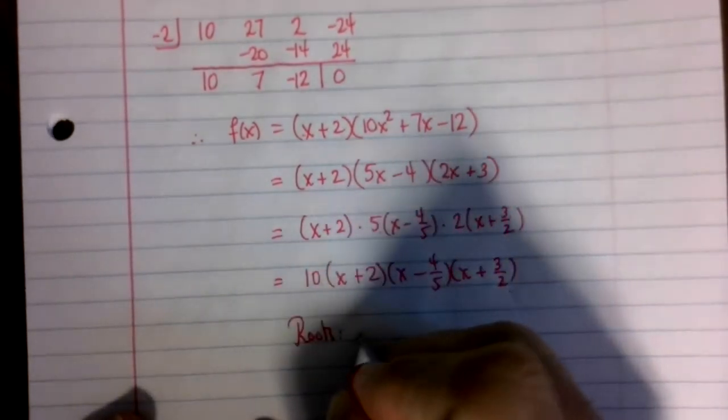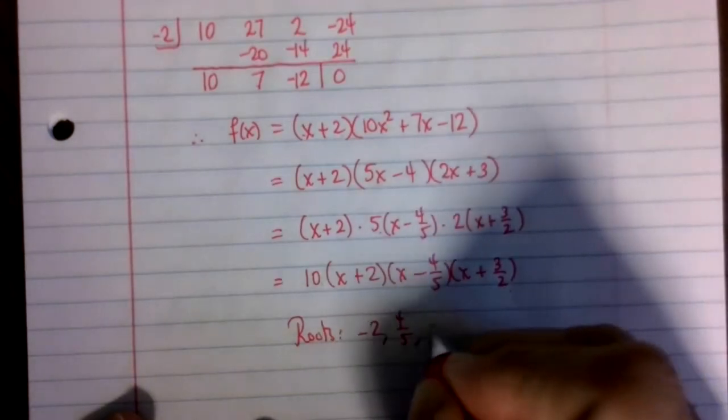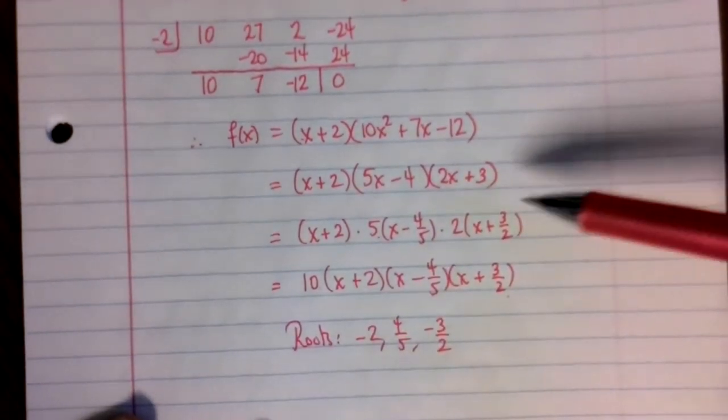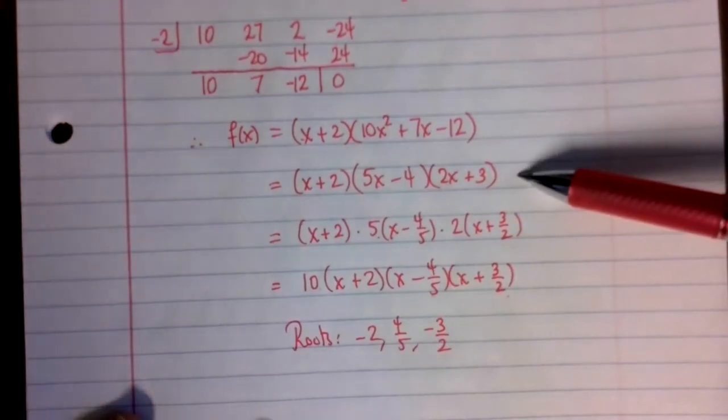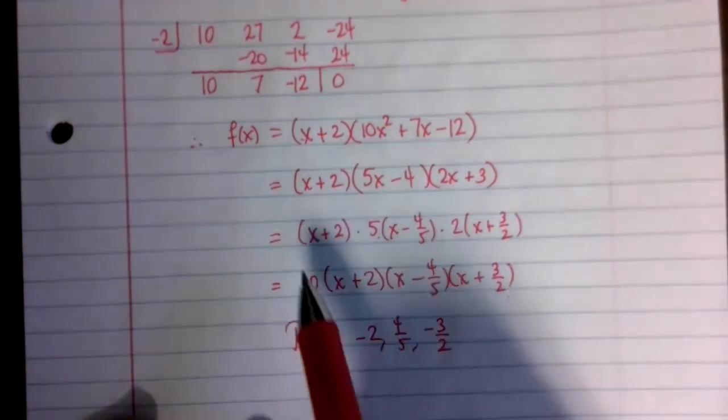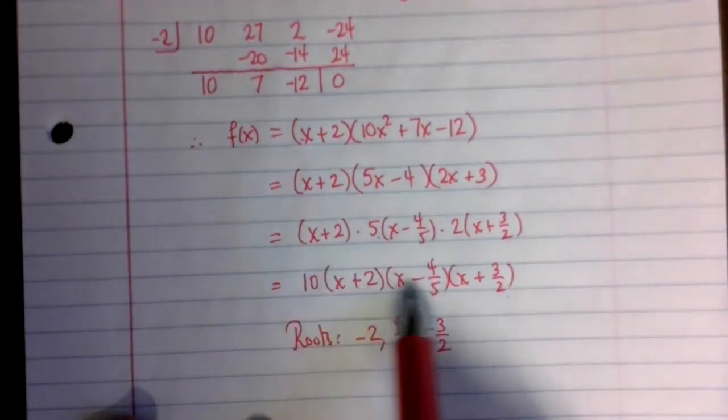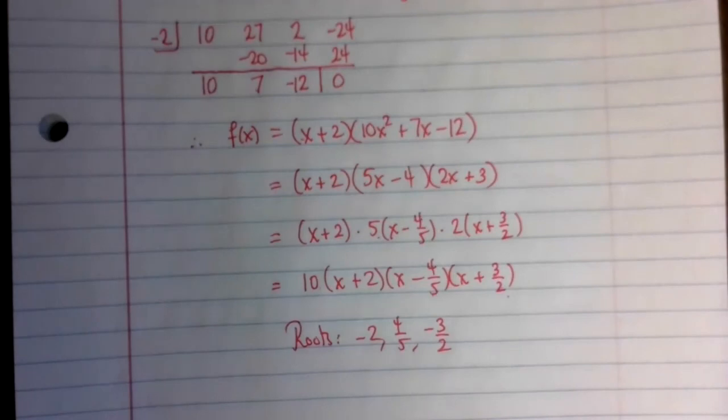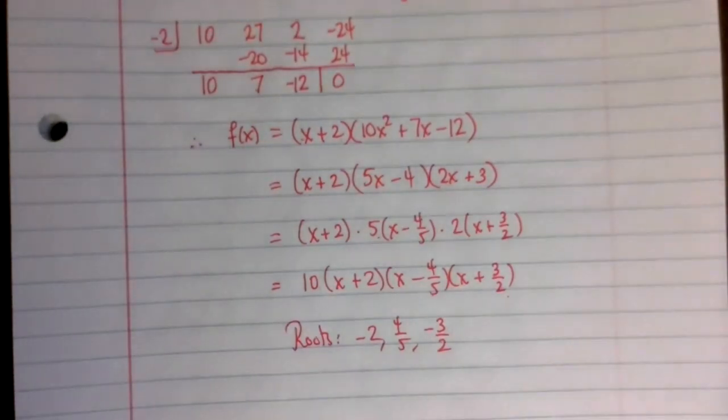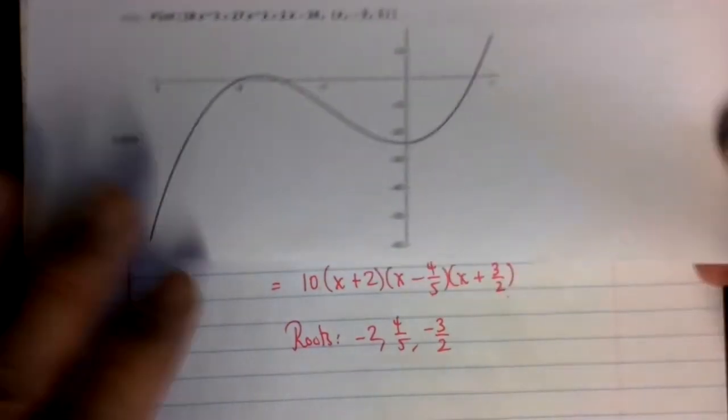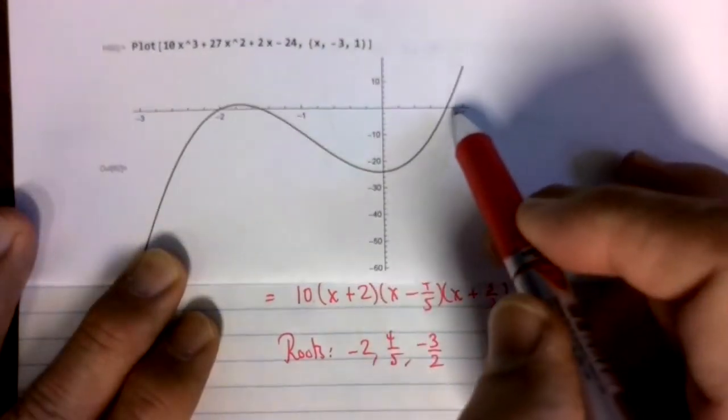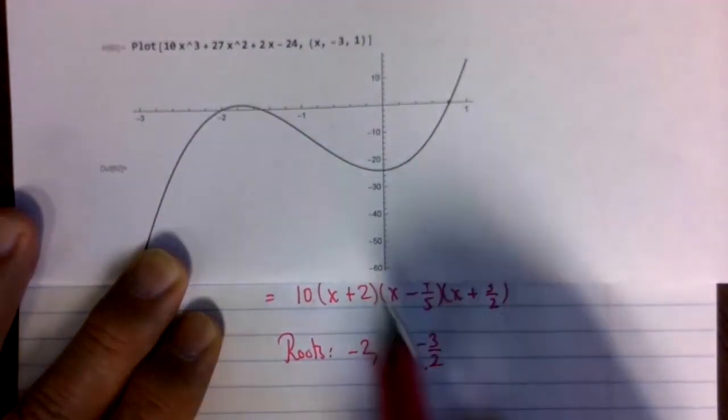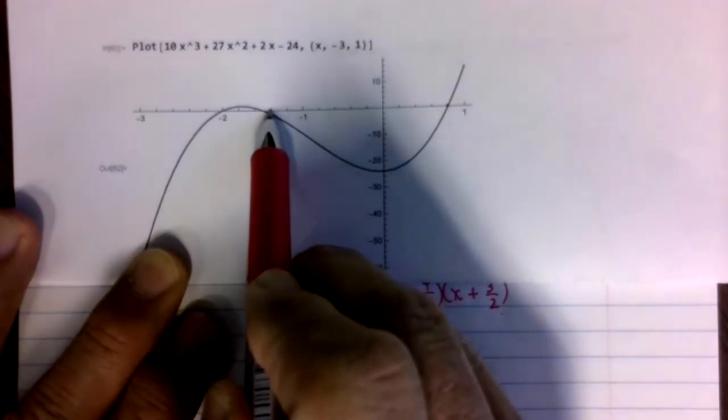So the roots would be negative 2, 4 fifths, and negative 3 halves. That said, leaving it like this would be perfectly acceptable for factoring this over the real numbers. This way, the leading coefficient is simply in front, and then I just read off the roots off the factorization. So that's how to use the rational root test and also the graph of the polynomial to see the roots. One final note, the roots here, 4 fifths corresponds to this x-intercept here, and negative 3 halves corresponds to this x-intercept here.